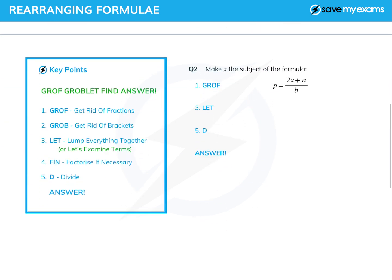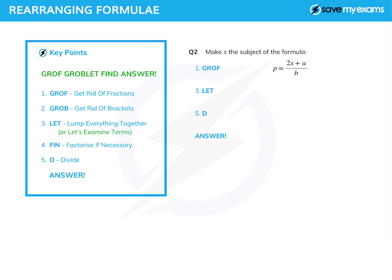Let's move on to another question. This one is slightly different — we're trying to get x on its own, and we're going to follow the rules. First of all, get rid of fractions. This time we're not multiplying by a number, we're multiplying by a letter. The letter on the bottom is b. So we multiply both sides by b, and we get the b's cancelling on the right-hand side. That leaves us with bp is equal to 2x plus a.